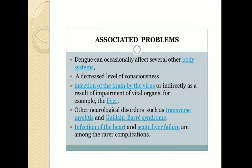Some problems that can appear after onset of dengue fever include decreased level of consciousness, infection of the brain by the virus or indirectly as a result of impairment of vital organs such as the liver. Other neurological disorders such as transverse myelitis, Guillain-Barré syndrome, infection of the heart, and acute liver failure are among the rare complications that appear after the onset of dengue fever.